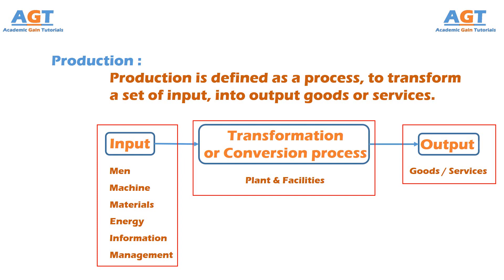In simpler words, a production system includes those activities of an organization where the resources flowing within a defined system are combined and transformed in a controlled manner to add value, by maintaining all policies stated by the management. The concept of production system is applicable to both production of components and production of services as well.